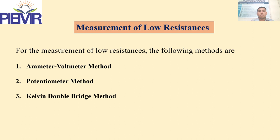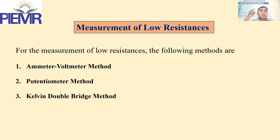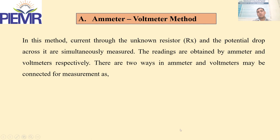Starting with low resistance measurement devices, there are three measurement techniques for resistances below 1 ohm. An important consideration is that if you try to measure low resistance using methods like the Wheatstone bridge or voltmeter-ammeter method, the lead resistance becomes a significant source of error — the connecting leads may have more resistance than the value being measured. Therefore, special methods like the Kelvin double bridge or voltmeter method are used.